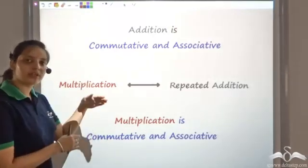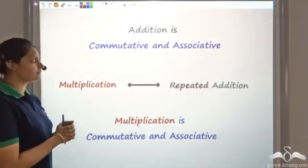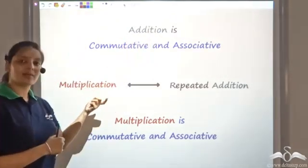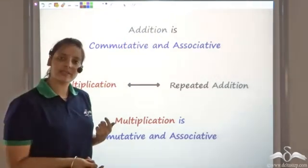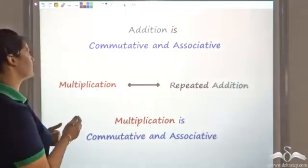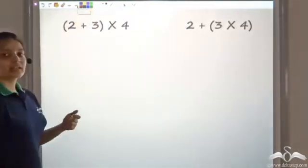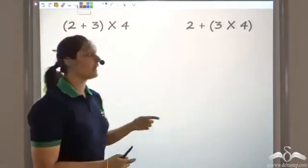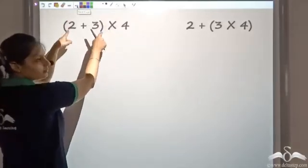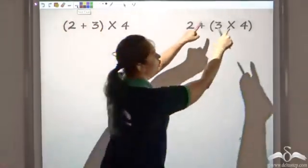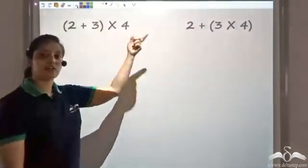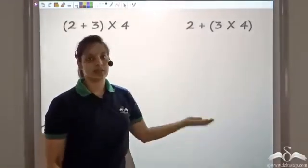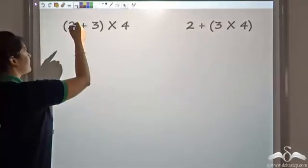Now let us see whether a combination of these two would work or not. If I take a combination of some addition and some multiplication, would that also be associative? If a combination of these two would be associative, then I can either group the first two or the last two, and the value should not change.